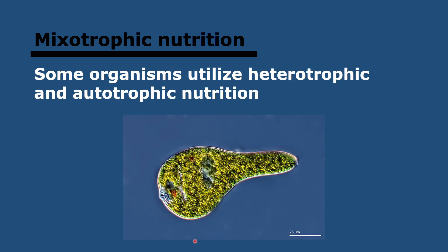Now let's look at nutrition. There's heterotrophic nutrition, where you obtain food by eating it, and autotrophic nutrition, where you produce it yourself. Some organisms can utilize both — for example, Euglena gracilis has chloroplasts so it carries out photosynthesis, but it can also feed on detritus. Then there are facultative mixotrophs, which can use either heterotrophic or autotrophic nutrition, and obligate mixotrophs, which cannot grow unless they utilize both modes of nutrition — most likely because they get different nutrients from each type.